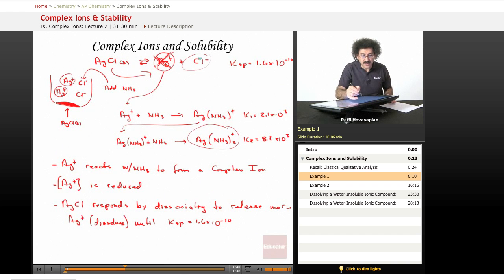The Ksp is concentration of that times the concentration of that. Once that's reached, no more of this will dissolve. But if I add ammonia to it, it reacts with the silver, depleting the silver ion concentration. Now, the Ksp doesn't match. There's a chloride ion, but there's virtually no silver ion. So more of this dissolves to form silver ion until it reaches the Ksp value. That's what's going on here.